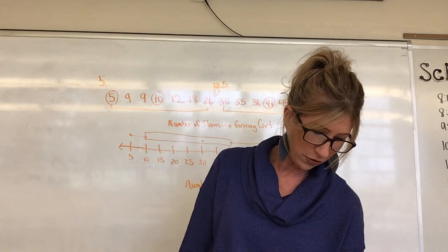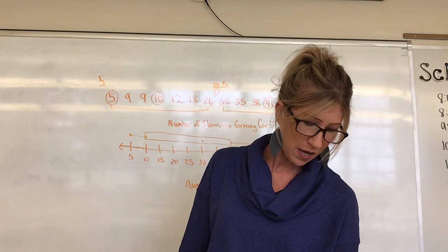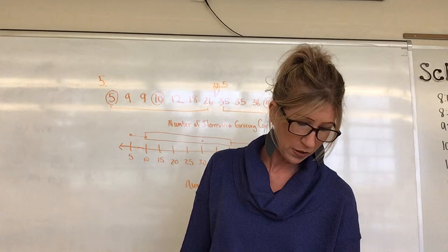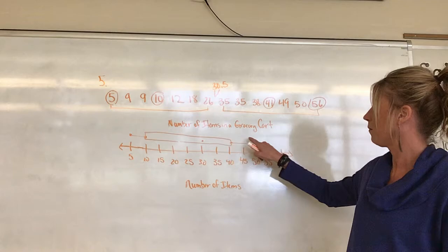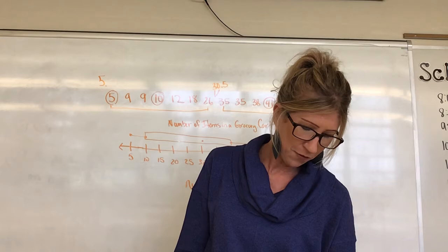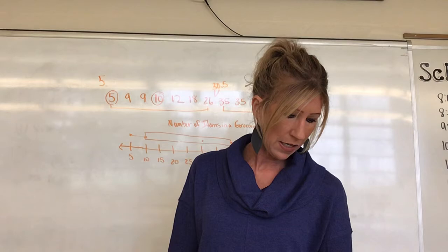Part A asks: what fraction of the creameries have at least 25 flavors — that's 25 or more. Well, 25 is the lower quartile dot, so we go from there to the median, upper quartile, and greatest value. That's three sections, each representing one-fourth, so about three-fourths of the creameries have at least 25 flavors.